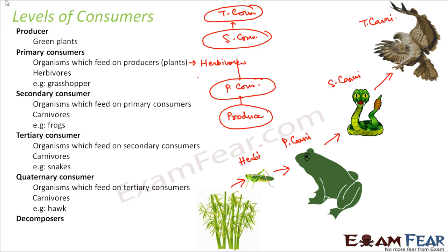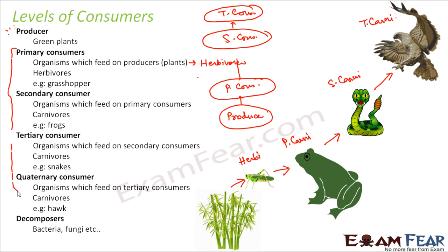Finally, we have the decomposers. So first we had the producers, next all the consumers, and finally the decomposers like bacteria and fungi, which feed on dead plants or animals. The dead producers or consumers are eaten up by the decomposers.